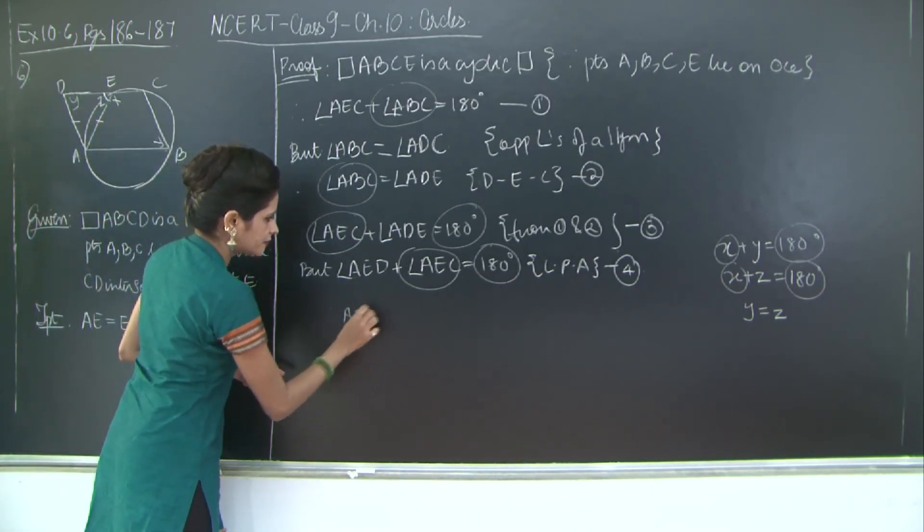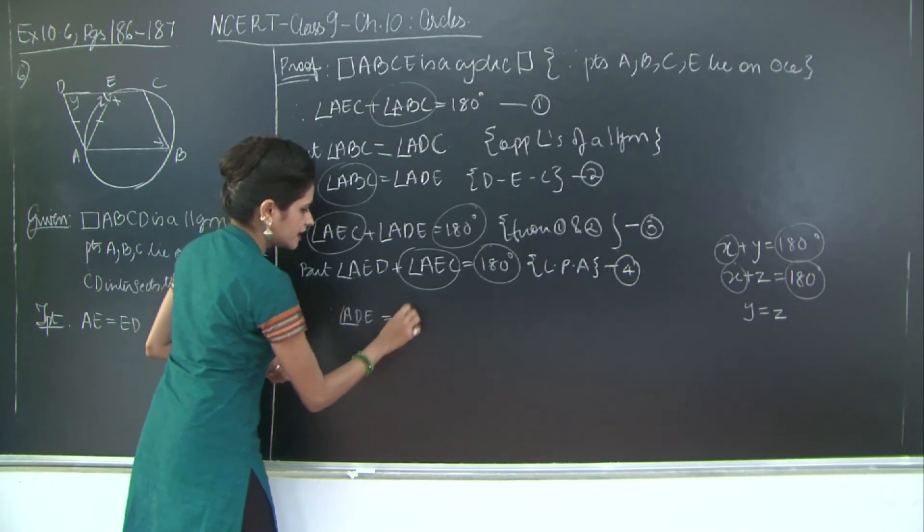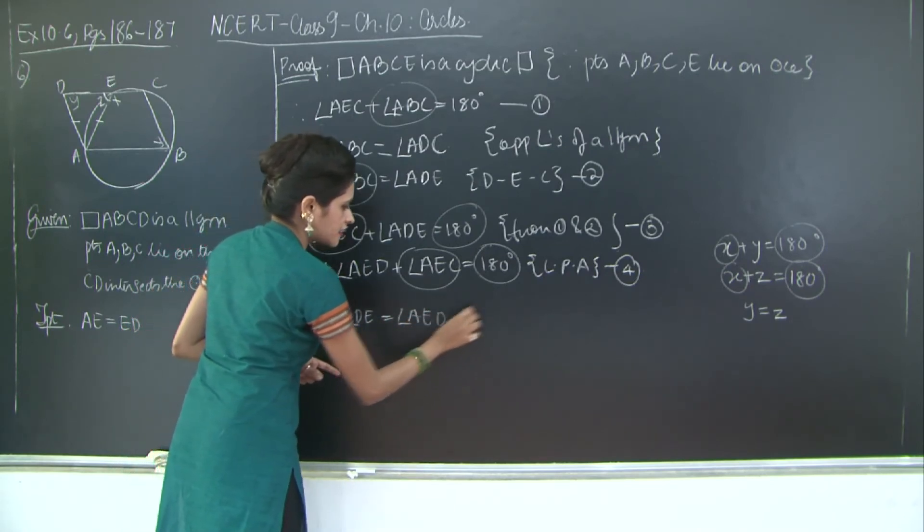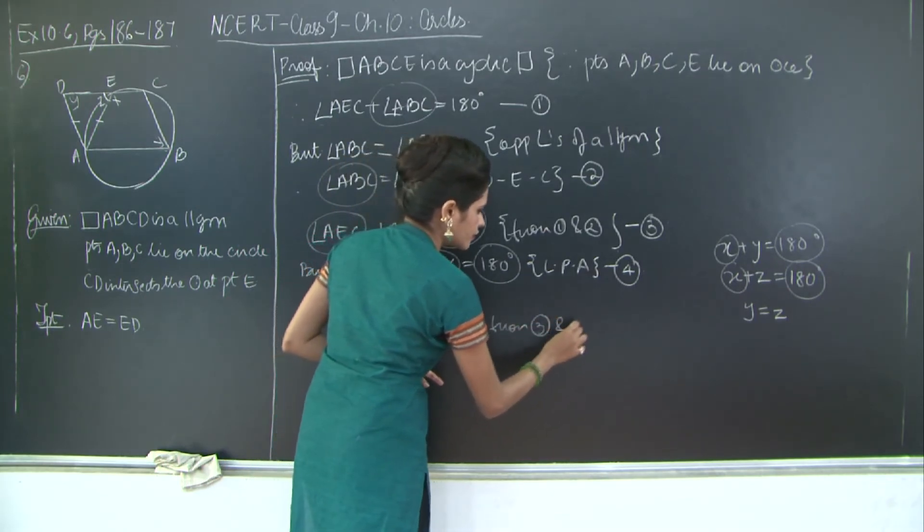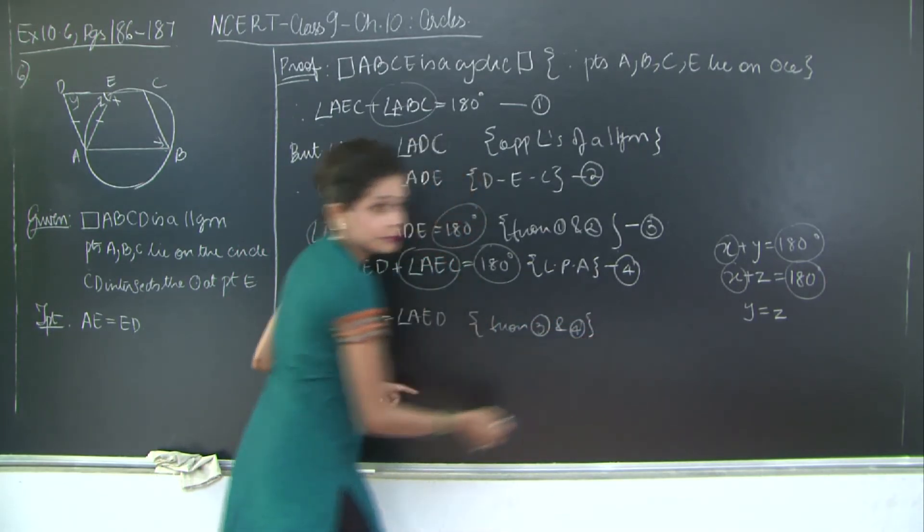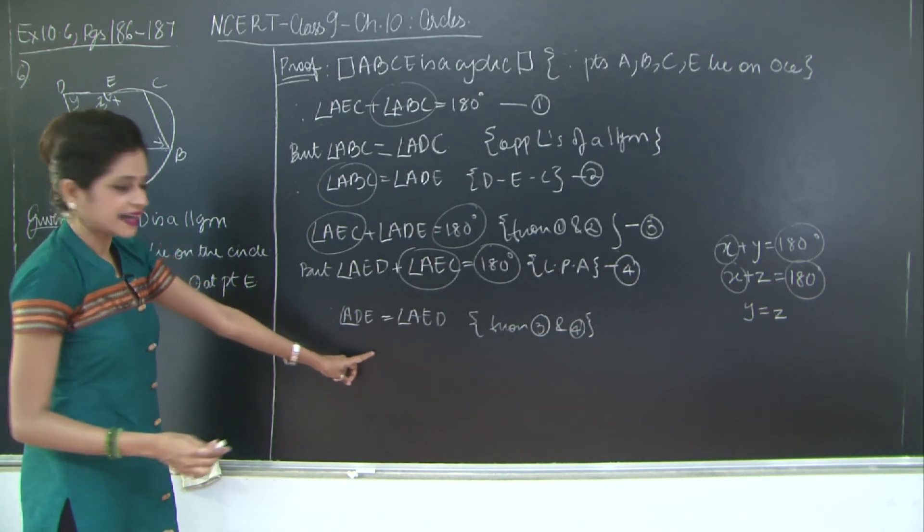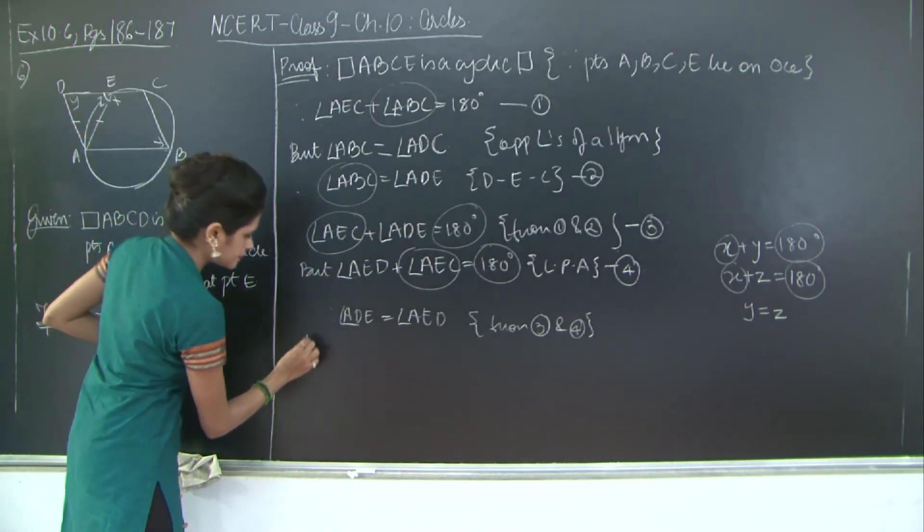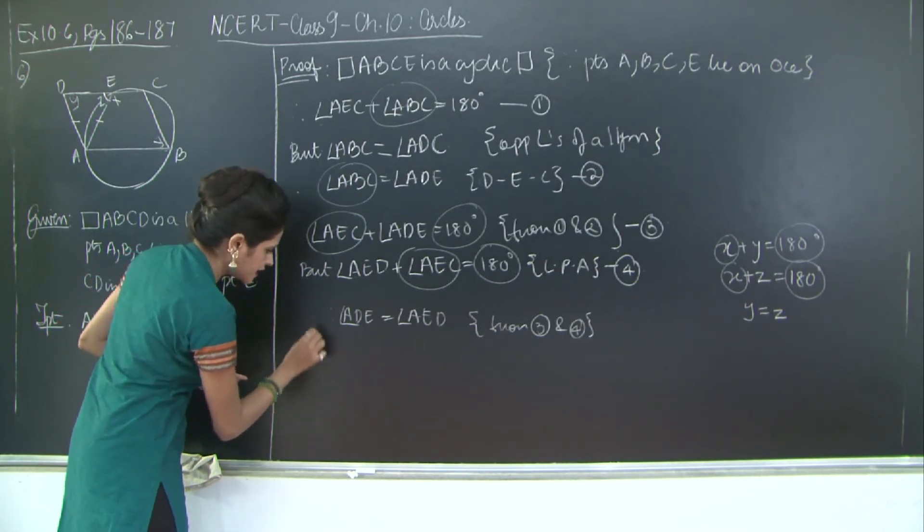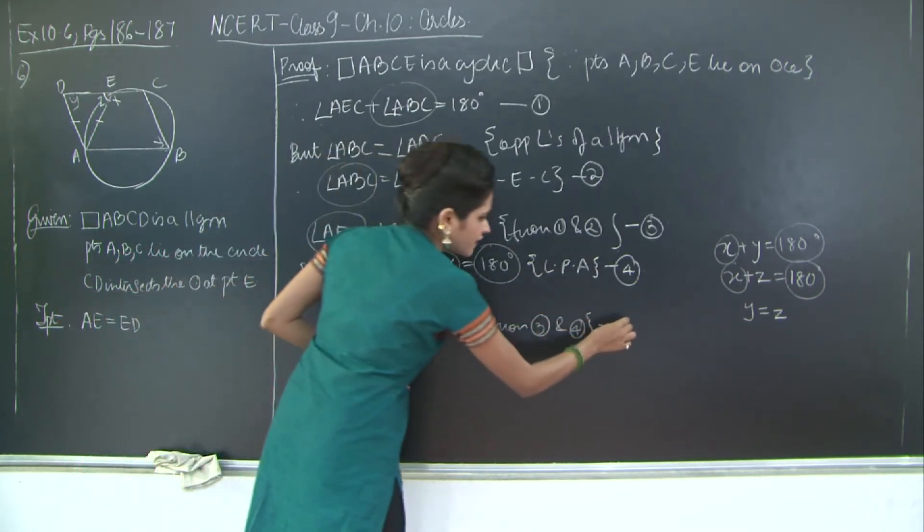That ADE is equal to angle AED. And I will say from three and four. But these are the base angles for triangle ADE. So or rather we can say, now we will mark this as five.